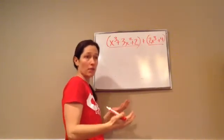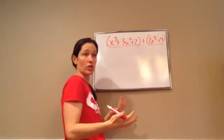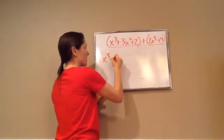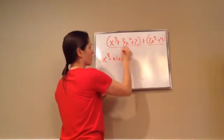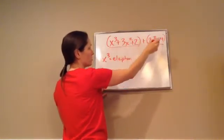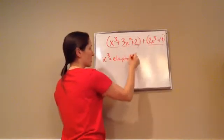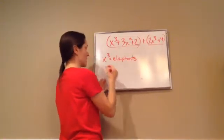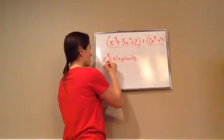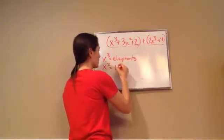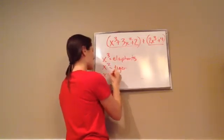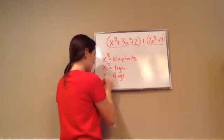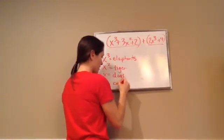Basically, what this problem ends up becoming is you seeing x³'s as elephants. Remember, whenever you're taking x³, x², etc., you have to see them like animals or their own entity. So x squares are like tigers. If there are any x's, dogs. And then numbers would be like cats.